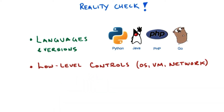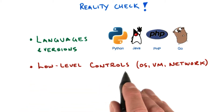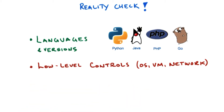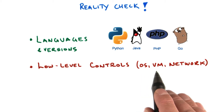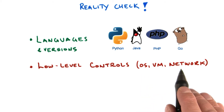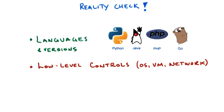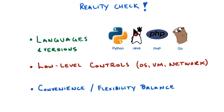Then moving over to low-level controls. Since App Engine was designed to create scalable applications as easy as possible, its execution environment also encapsulates many low-level controls. For example, operating system type and configuration, virtual machine configuration, or network controls, etc., are not visible and cannot be configured in App Engine. And that goes for other things as well.